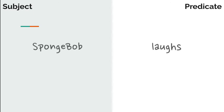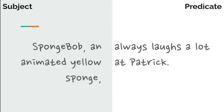It's easy to tell if a sentence is missing something, but when there's more going on, it's easier to leave something out. Let's take a look at how it might happen.